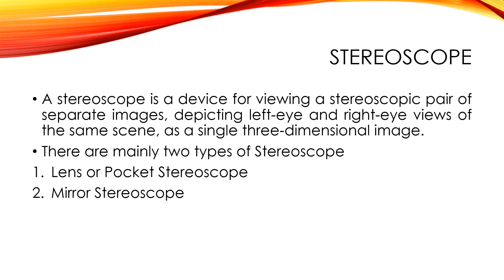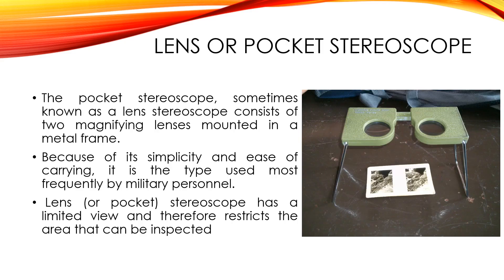A stereoscope is a device for viewing a stereoscopic pair of separate images depicting left-eye and right-eye views of the same scene. A stereoscope consists of two magnifying lenses mounted in a metal frame — this is known as the pocket stereoscope.